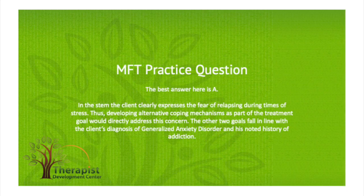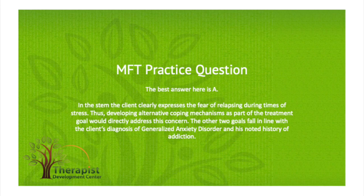The best answer here is A. In the stem, the client clearly expresses fear of relapsing during times of stress. Thus, developing alternative coping mechanisms as part of the treatment goal would directly address this concern. The other two goals fall in line with the client's diagnosis of generalized anxiety disorder and his noted history of addiction. Answer B could be tempting; however, there is no mention in the stem regarding the presence of or lack of social supports, and this answer does not directly address the fear of relapse expressed by this client. Answer C highlights evaluating client's motivation, which is not mentioned in the stem as a concern — in fact, the client appears to be motivated and does not mention resistance to therapy or a lack of motivation. This answer does not relate back to the information shared in the stem, as do all components of answer A. The first part of answer D is an intervention, but we have to come up with goals based on the question that is asked, so this answer can be eliminated.